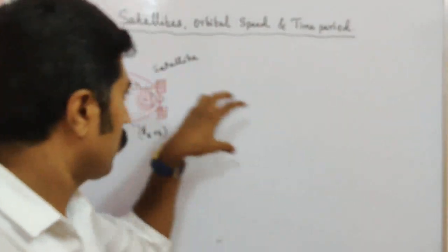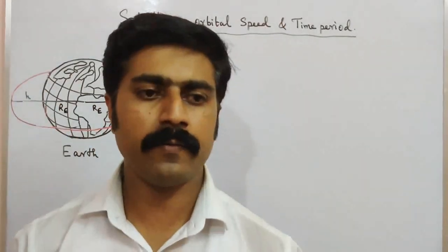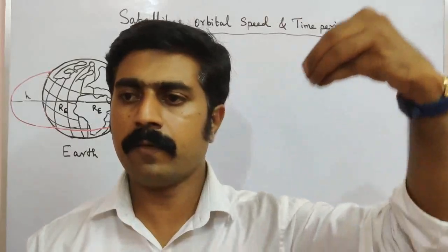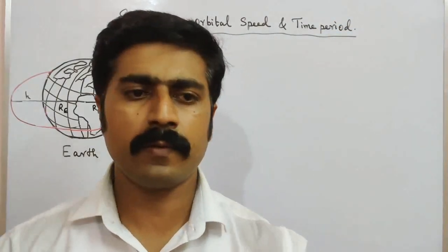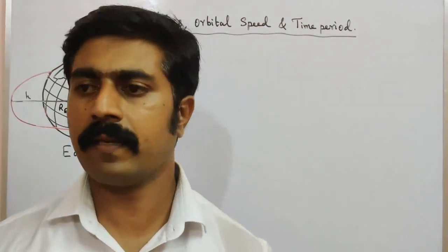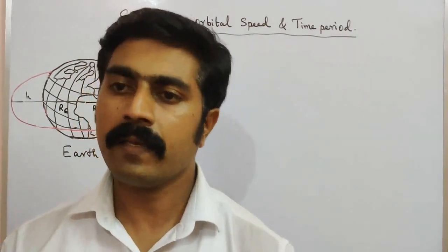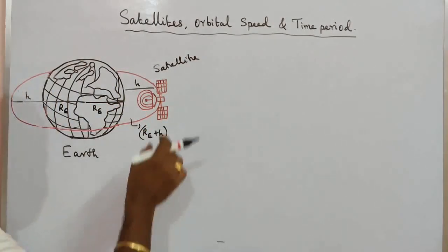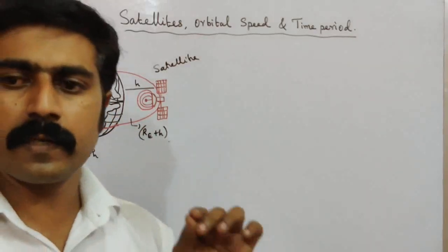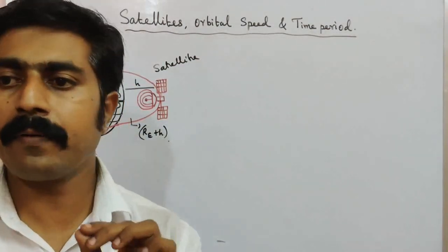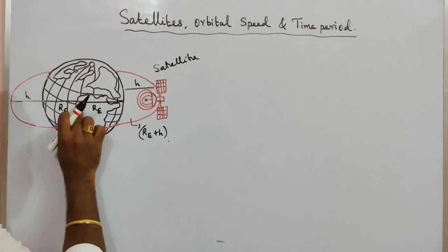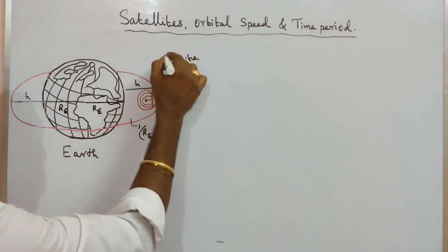Now we can look at satellites. This satellite revolves around the Earth in a circular orbit with the help of gravitational force. The gravitational force provides the centripetal force on the satellite.